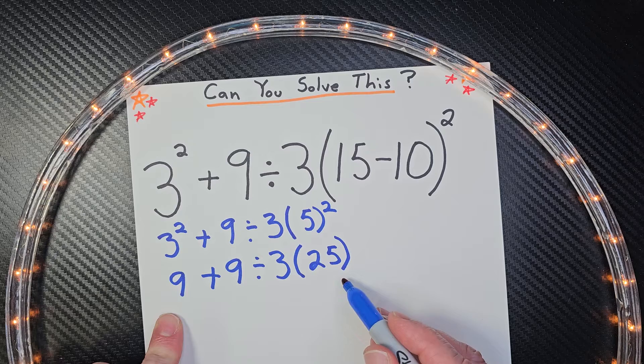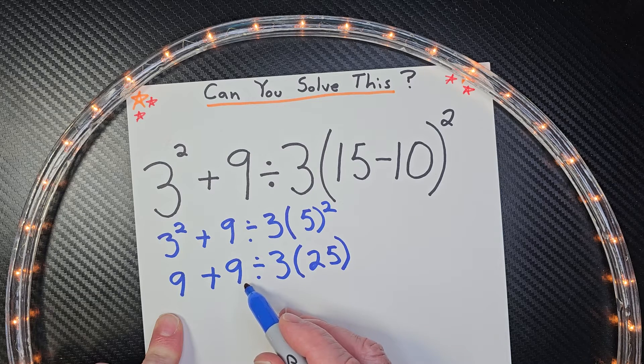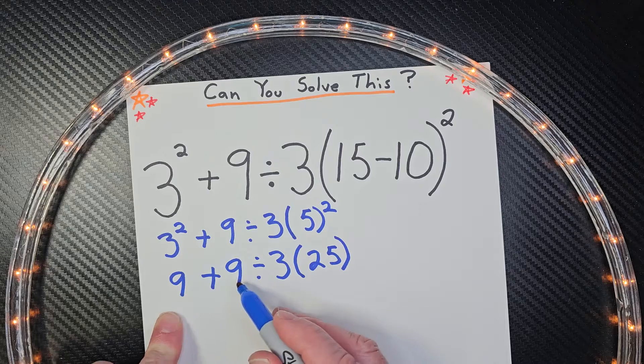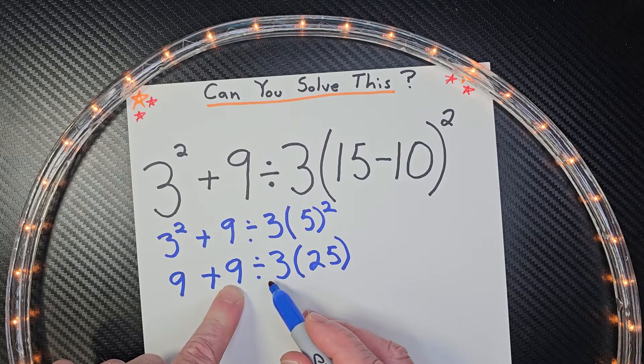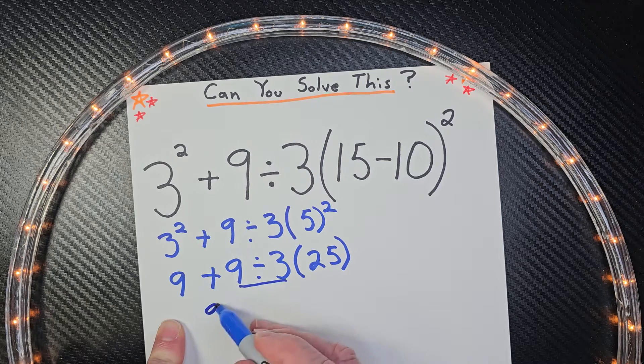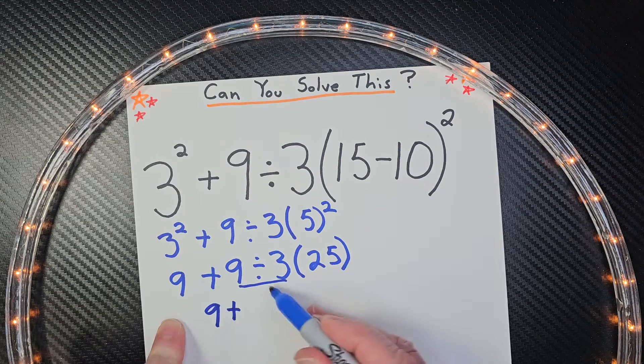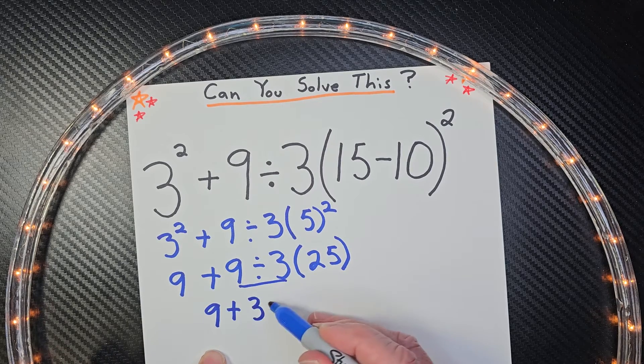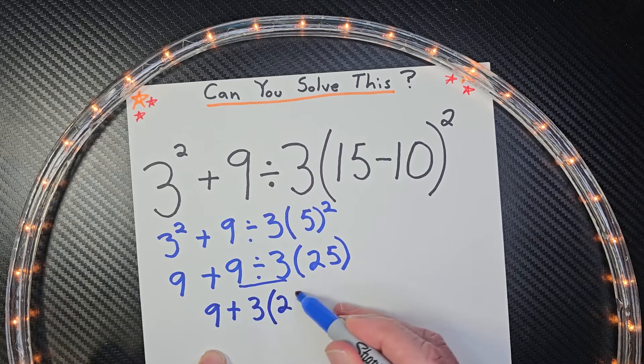All right. Now, what do I have left here? I need to do my division and multiplication next. Don't go 9 plus 9 because that's addition. We need to do our division right over here. So that's our first step. So it would be 9 plus 9 divided by 3 would be 3 and then times 25.